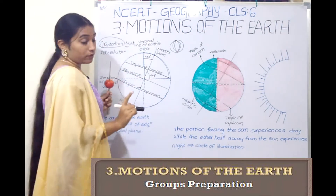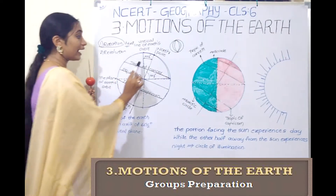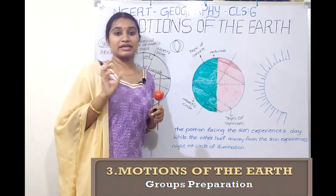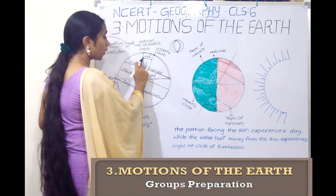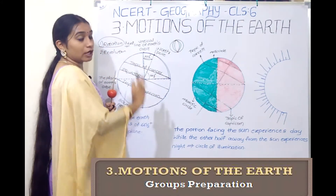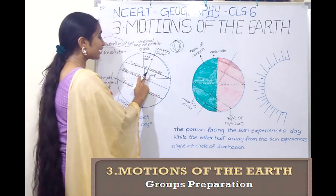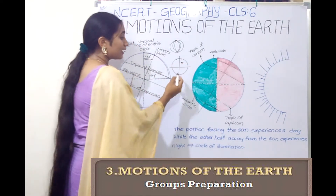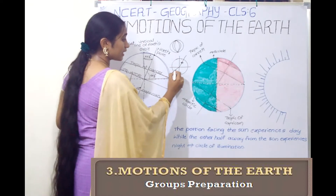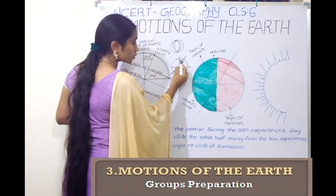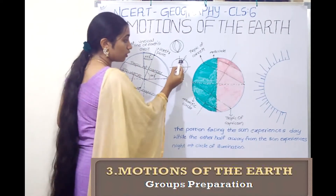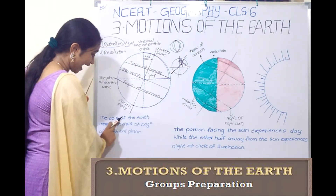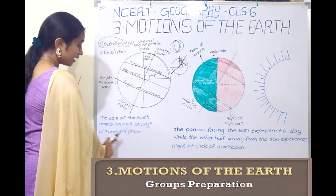The blue color dotted lines represent the Earth's orbit plane. This is the plane of the Earth's orbit horizontally, and this is the vertical line. Based on the Earth's orbital plane, the axis of the Earth makes an angle of 66 and a half degrees with its orbital plane.